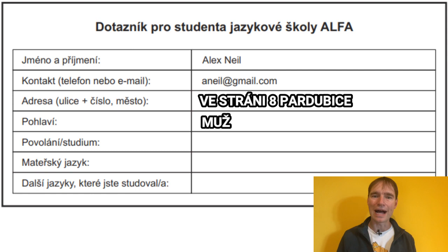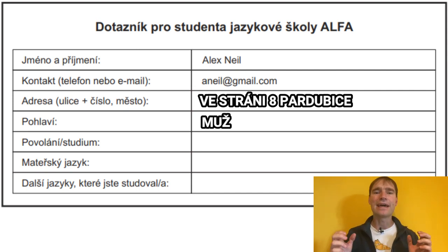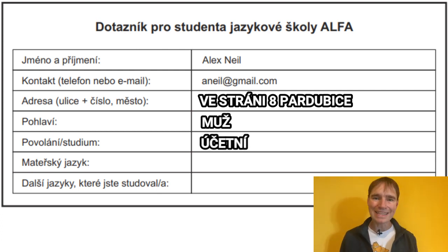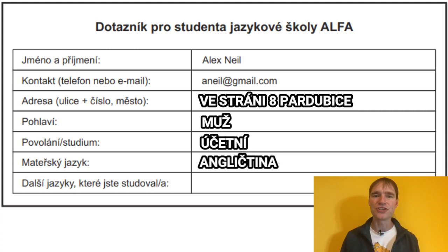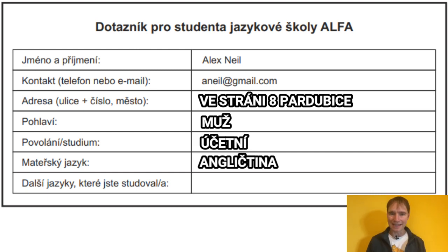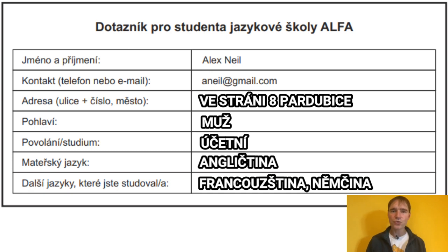Next one — 'povolání/studium', that is occupation. Well, let's say my friend is an accountant, so let's write 'účetní'. Then 'mateřský jazyk' — that is of course native language. So Alex Neil could be from Australia, so let's write English — 'angličtina'. 'Další jazyky, které jste studoval' — so next languages that you studied. Alex also studied French and German, so let's write 'francouzština a němčina'. That was easy, right?